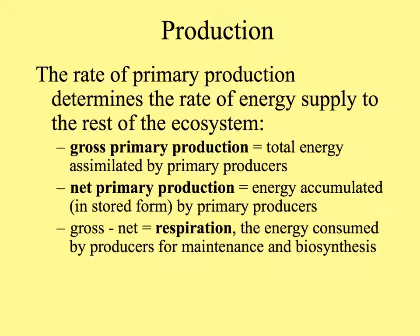By the time you get to the third trophic level, the second-order carnivores, it's like a candle on the birthday cake. The rate of energy supplied to the rest of the ecosystem is determined by the rate of primary production — how much plant biomass is produced. Gross primary production is the total energy that primary producers assimilate. Net primary production is the new biomass that they actually produce. The difference between gross and net productivity is respiration — the energy consumed by producers to maintain their bodies and synthesize new compounds.